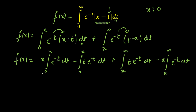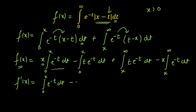Now I'm going to apply the Leibniz rule because I can see variable limits. So I'm going to differentiate f(x). For the first term, since x and the integral are multiplied, I have to use the product rule. Differentiating x gives 1, so I get the integral from 0 to x of e^(-t) dt. Then applying Leibniz on the integral itself gives plus x times e^(-x). For the lower limit, the contribution is 0.